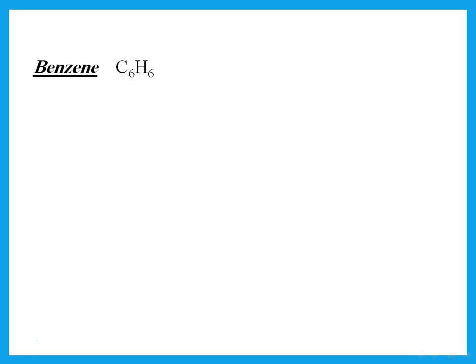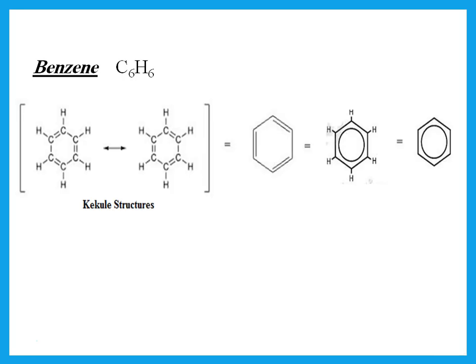What is benzene? Benzene is C6H6. Kekulé structures show the benzene ring with alternating single and double bonds. So you can either have the first carbon with a single bond with the next carbon or a double bond with the next carbon.